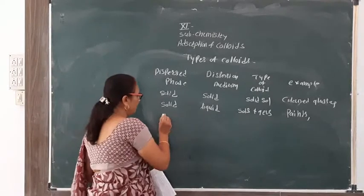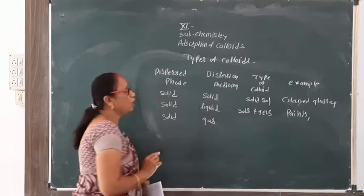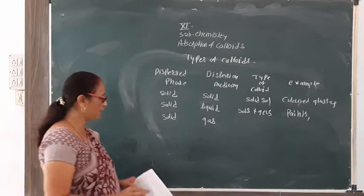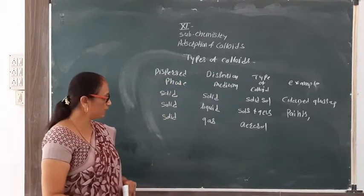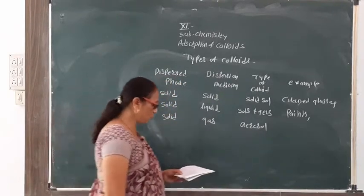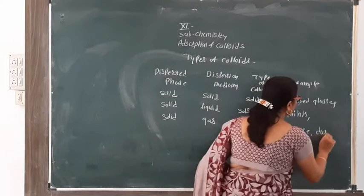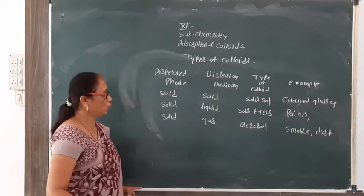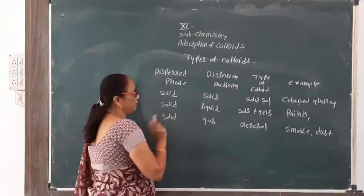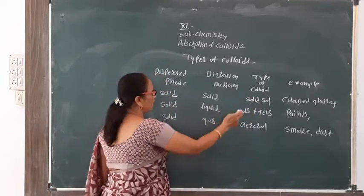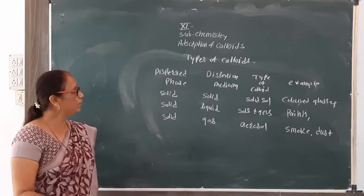When the dispersed phase is solid and the dispersion medium is gas, the colloidal dispersion is called an aerosol. Examples of aerosol include smoke and dust. So: solid-in-solid is solid sol, solid-in-liquid is sols and gels, and solid-in-gas is aerosol.